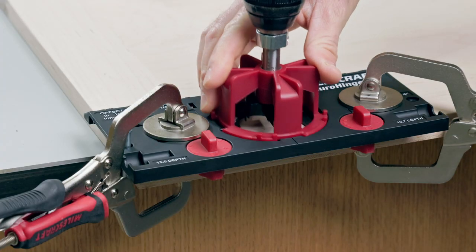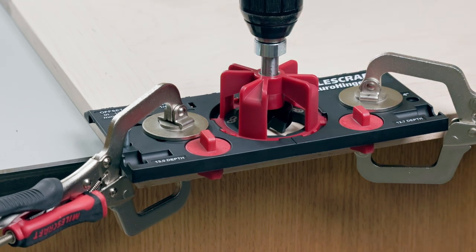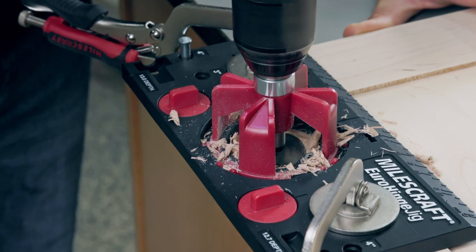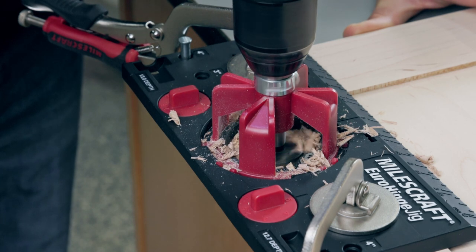The carbide tip Euro Hinge bit makes quick work of boring out the perfect 35mm hole in the metal bushing line drill guide that ensures that your holes are straight and flat.